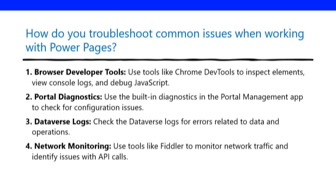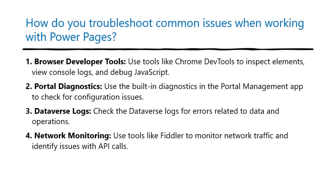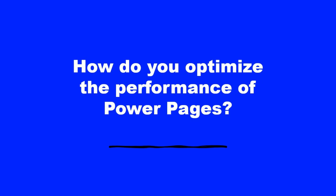How do you troubleshoot common issues when working with Power Pages? One, browser developer tools — use tools like Chrome DevTools to inspect elements, view console logs, and debug JavaScript. Two, portal diagnostics — use the built-in diagnostics in the Portal Management app to check for configuration issues. Three, Dataverse logs — check the Dataverse logs for errors related to data and operations. Four, network monitoring — use tools like Fiddler to monitor network traffic and identify issues with API calls.